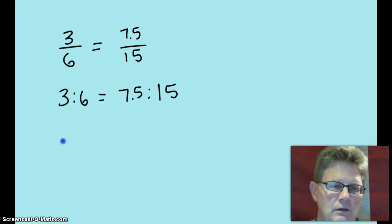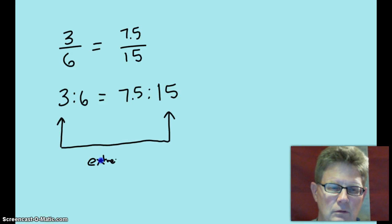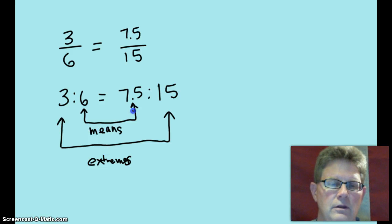The reason I write that is because I need to introduce a couple of terms. The 3 and the 15 are called the extremes. They're on the outside. So what do you call these two in the middle? These are called the means, the two in the middle are the means.